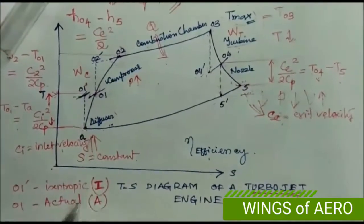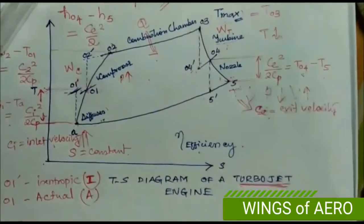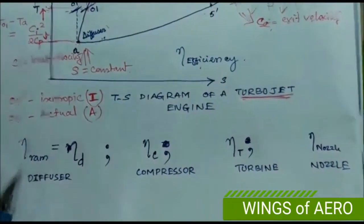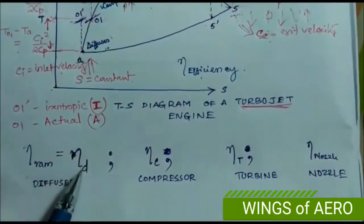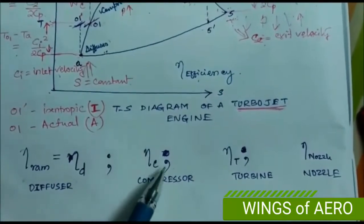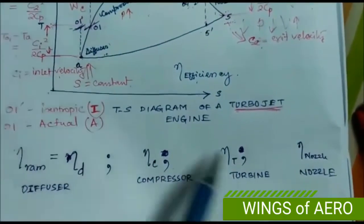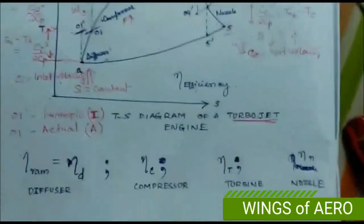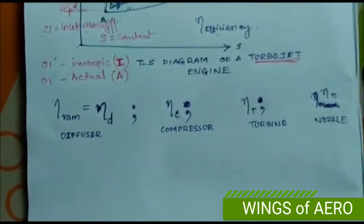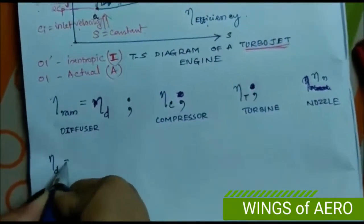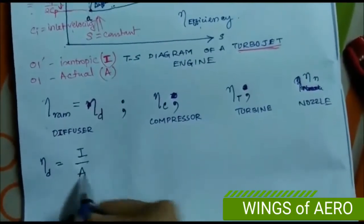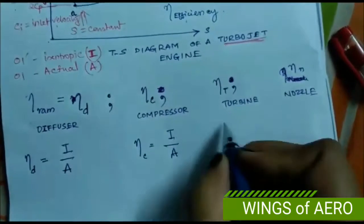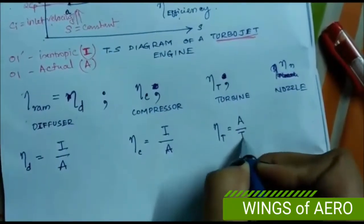The efficiency of the diffuser, compressor, turbine, and nozzle are interrelated using isentropic and actual relations. The four efficiencies are: ram or diffuser efficiency η_d, compressor efficiency η_c, turbine efficiency η_t, and nozzle efficiency η_n. The key memory trick is: η_d and η_c are ideal divided by actual, while η_t and η_n are actual divided by ideal.